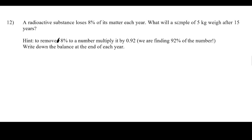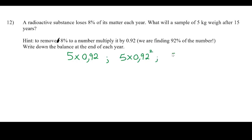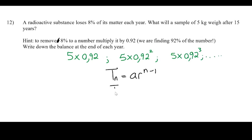At the end of the first year it will weigh 5 × 0.92. Then that amount has 8% taken off again — multiply by 0.92 — so it's 5 × 0.92². At the end of the third year it's 5 × 0.92³, and so on. We want to know what it weighs after 15 years, using tn = a·r^(n−1).